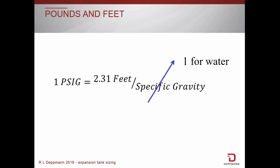First, we need to convert the height of the water in the building into pounds of water pressure. This is the equation we use. The conversion factor is different for water and glycol due to their specific gravities.